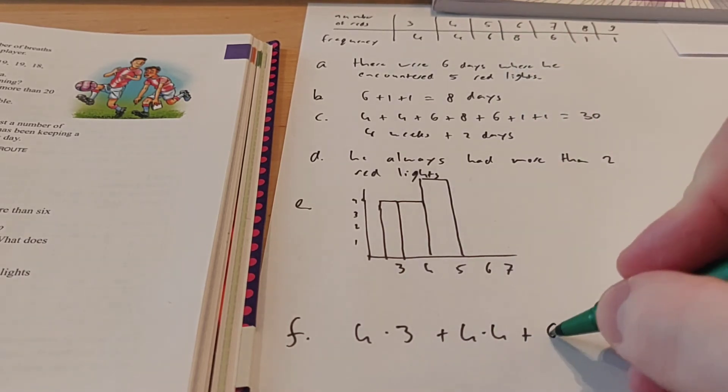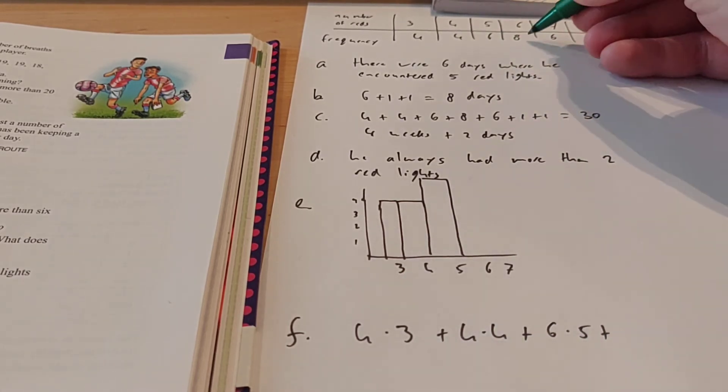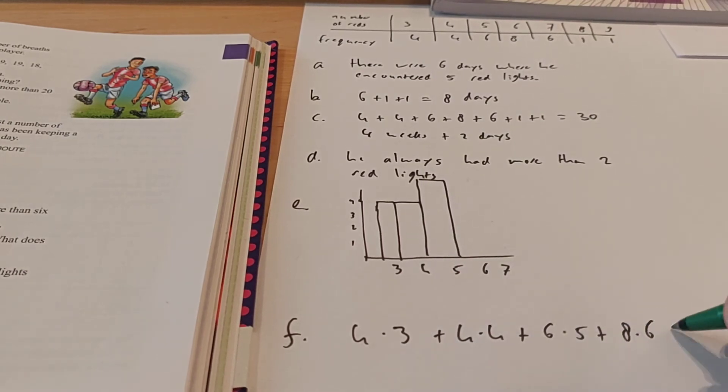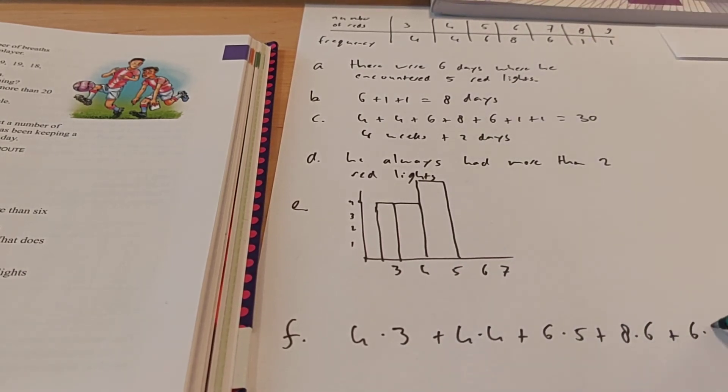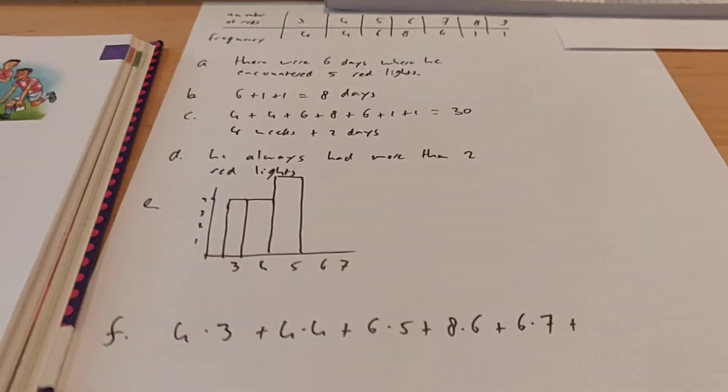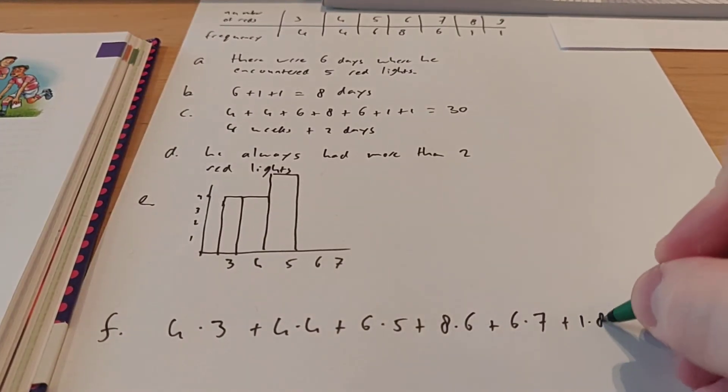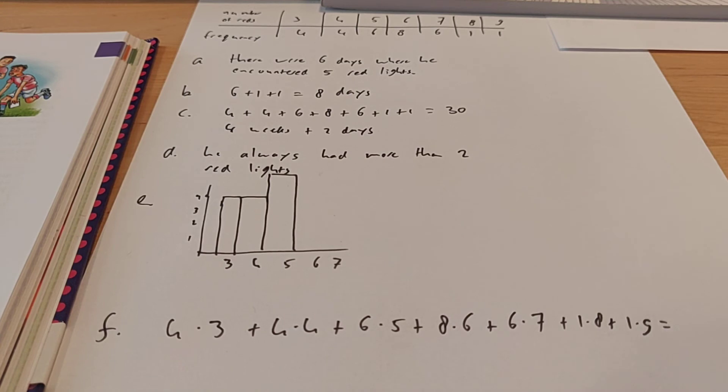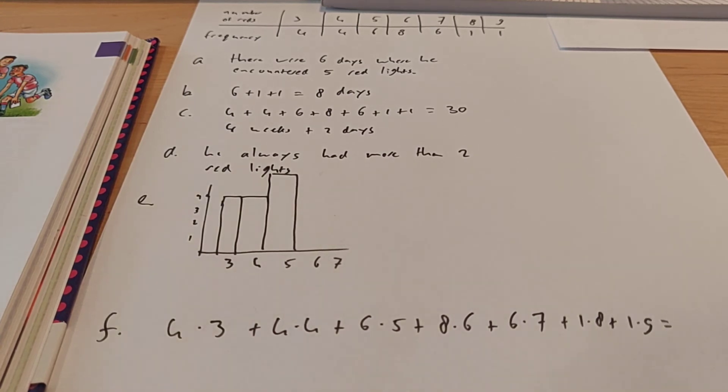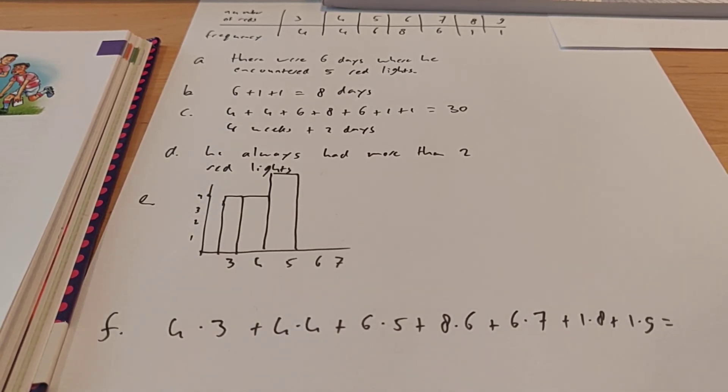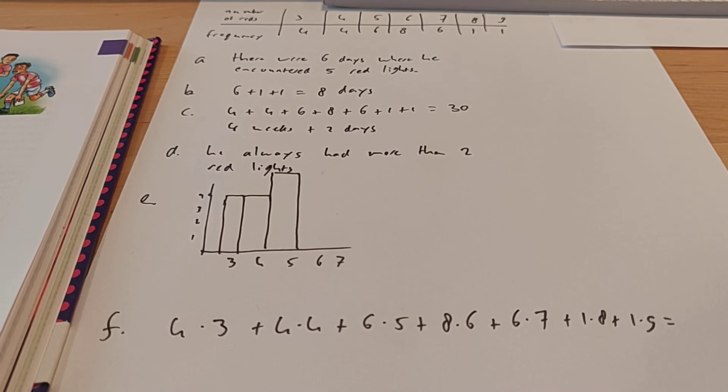Plus 4 times 4, plus 6 times 5, plus 8 times 6, plus 6 times 7, and then also 1 times 8, and 1 times 9. So if you add all of that, and then you know what the total number of traffic lights is. So let me calculate this for you.